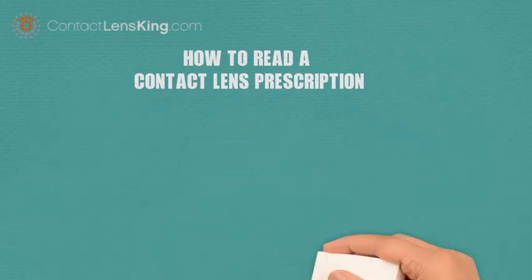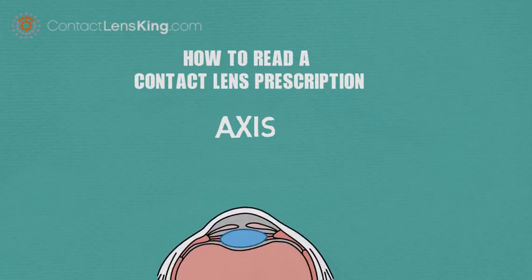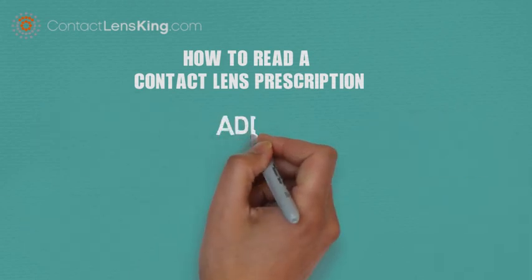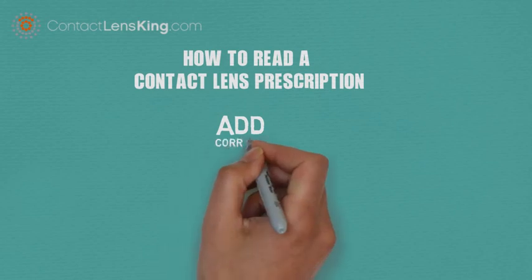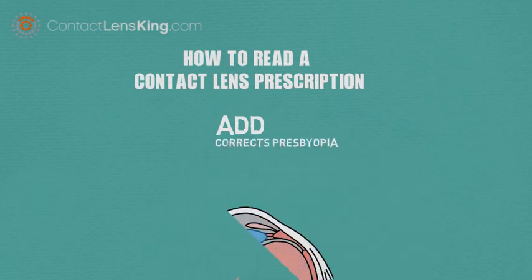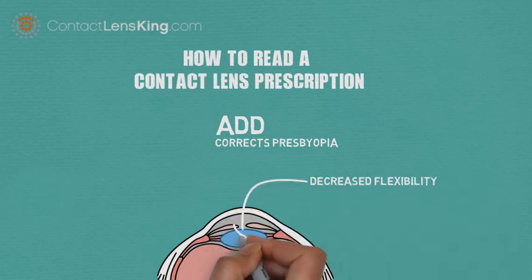Axis. The axis is only used for astigmatic prescriptions. It is used to show the location of the astigmatism in the eye. ADD. This attribute is used to specify the correction needed to offset vision difficulties caused by presbyopia, a condition caused by the decreased flexibility of the eye's natural lens.